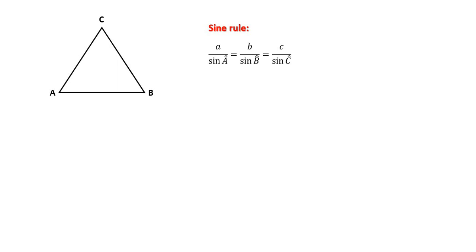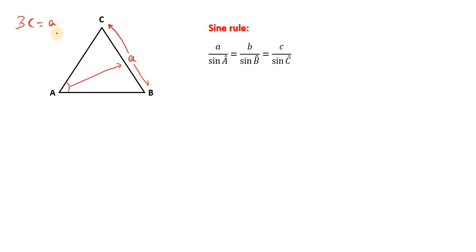Now we have side A here and angle A here. All we're saying is that the side facing this particular angle — that's why we use the same letter. This is angle A, so where is side A? Side A faces it. So side A is actually here, which is the same as saying side B-C. Angle faces its side. When I say B-C, notice I didn't mention A, so this is actually side A.